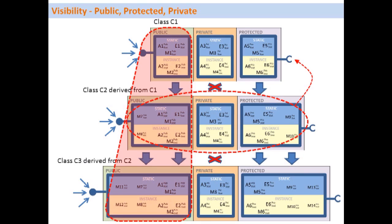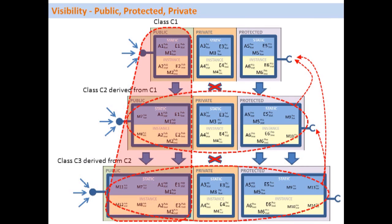The protected section can be accessed only through subclasses. This means the protected section of class C1 can only be accessed by its subclass C2, or by class C3 which is the further subclass of C2. So the protected section of a class is accessible only to its subclasses.